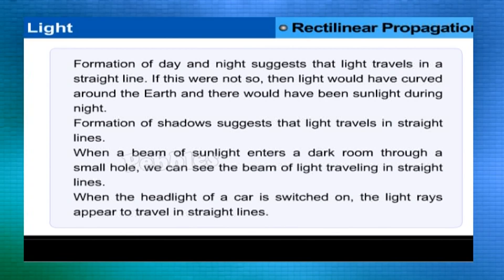The formation of day and night also suggests that light travels in a straight line. If this were not so, light would have curved around the earth and there would have been sunlight during the night. Similarly, the formation of shadows suggests that light travels in straight lines.